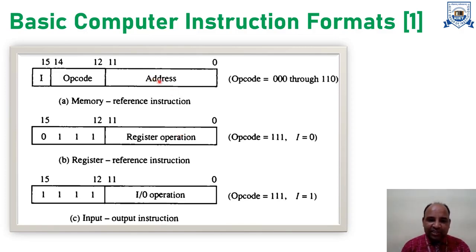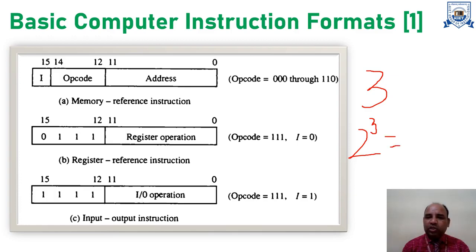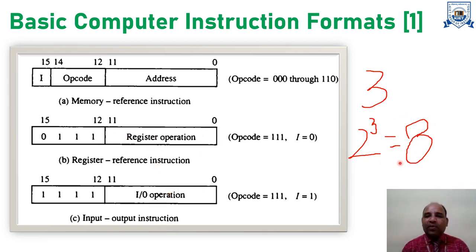At first glance it may seem that since the opcode is represented by only 3 bits — bits 12, 13, and 14 — that means 2 to the power of 3 equals 8, giving only 8 different operations. However, that is not the case. As seen in the register reference and input-output instructions, bits 0 to 11 — these 12 bits — are also used for opcode purposes. So the total number of different operations is much larger than 8, as it might seem from the memory reference instruction alone.